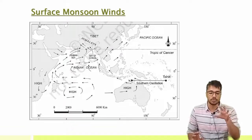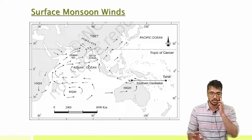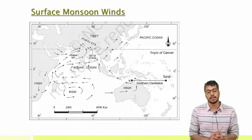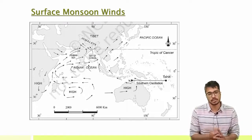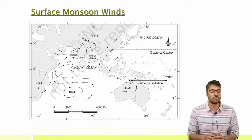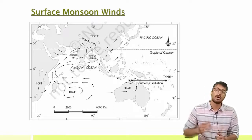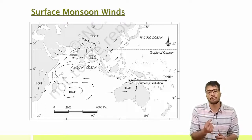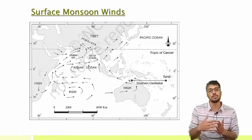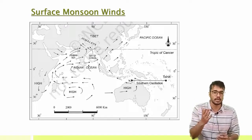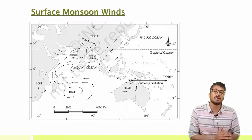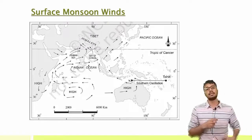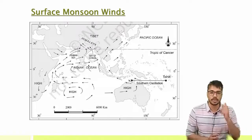Observe this figure on your screen which describes the surface of monsoon winds. As we have already discussed, during summer season the ITCZ — the Intertropical Convergence Zone — is on the Tropic of Cancer. This is where the trade winds converge: from the northeast in the northern hemisphere and from the southeast in the southern hemisphere.